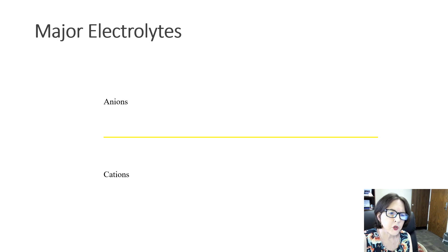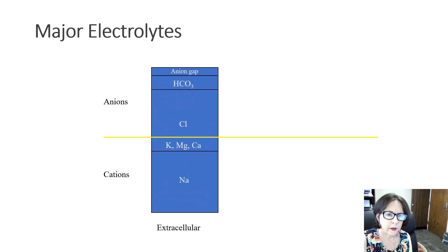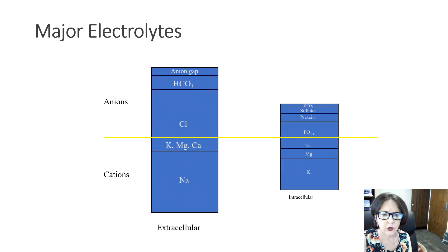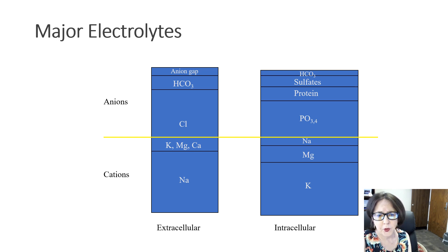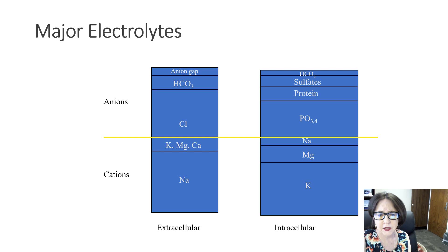The major intracellular cation, or positively charged ion, is potassium. The major extracellular cation is sodium. Cations are usually joined to anions, or negatively charged particles, to form neutral molecules. Examples are bicarb, chloride, and phosphorus — the major anions — and they form molecules such as sodium chloride, potassium chloride, calcium carbonate, and calcium chloride.